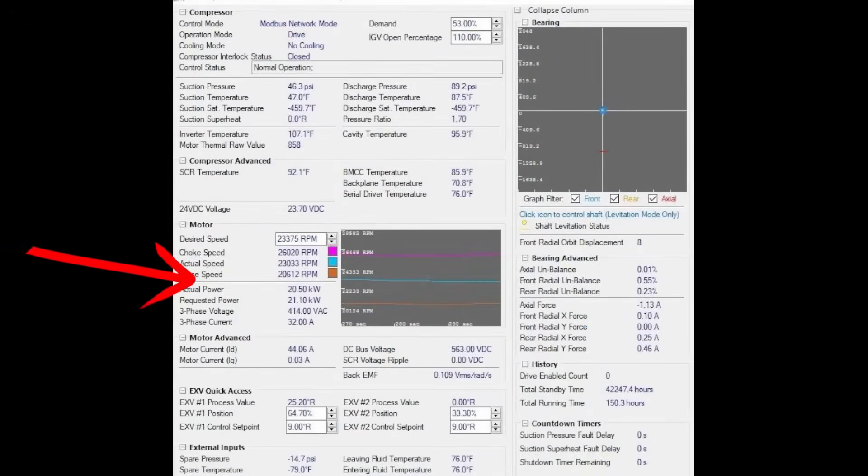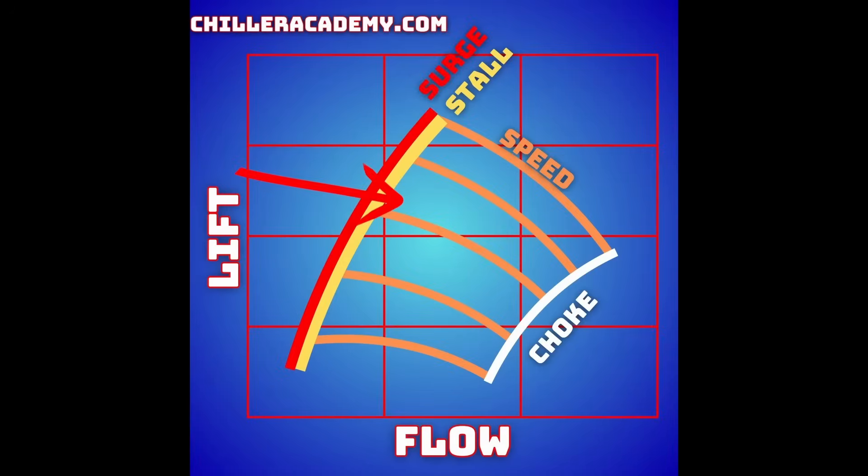In reference to our TurboCore here, if we have surge speed, if the actual speed lowers below this surge speed, meaning that we came over here and we just move straight to the left of this graph without actually reducing lift, which can happen, then we push into a surge state. Versus if we increase speed without adjusting our lift, depending on where we're at here, we have the potential to push over into a choke condition.